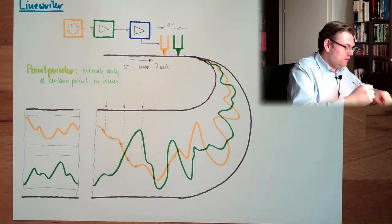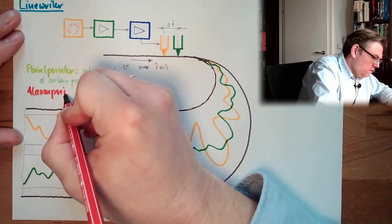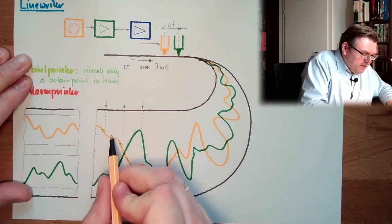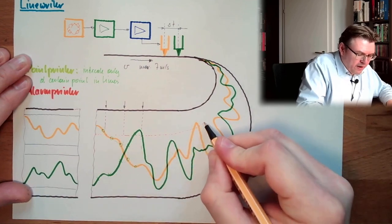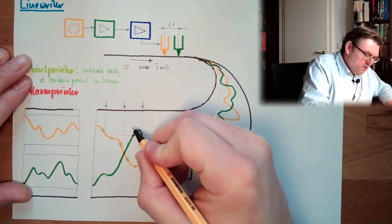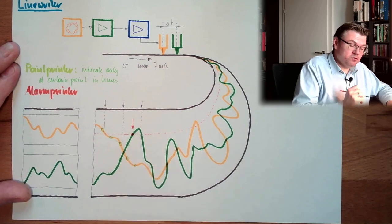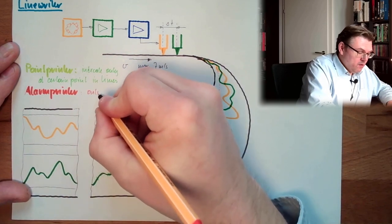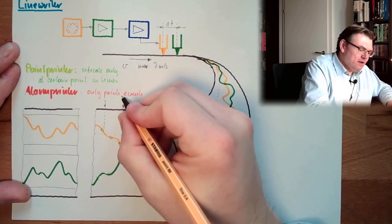And then we have some alarm printer. Let's say here is somewhere a level where it's getting dangerous for the green line. Then here we would indicate an alarm. Hey, the temperature has reached maximum level or is beyond maximum level.